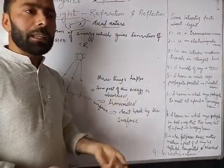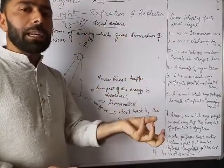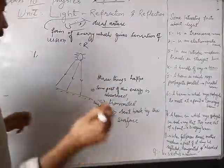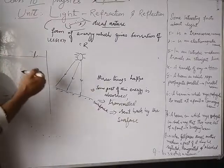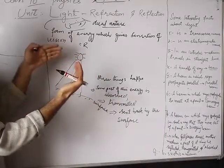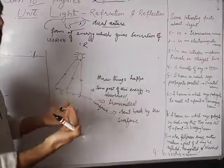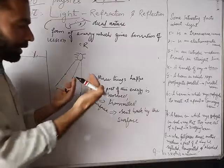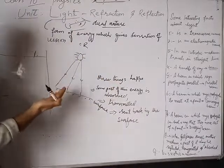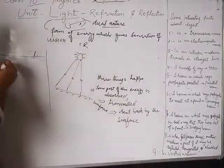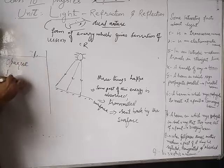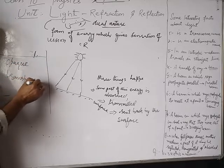The property depends on the object — whether it will absorb, reflect, or transmit. On that basis, objects have been classified based on the property of the light interaction. When light falls on an object, the object may absorb some part of it, transmit some part of it, and send back some part of it. On that basis we have three types of objects: opaque, transparent, and translucent.